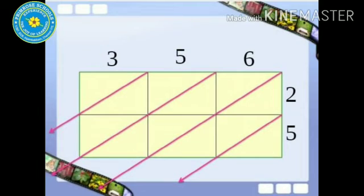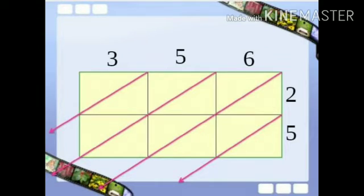Then write each partial product as a 2 digit number with a tens digit in the upper left triangle and ones digit in the lower right triangle. If the product does not have a tens digit, write a 0 in the tens triangle.